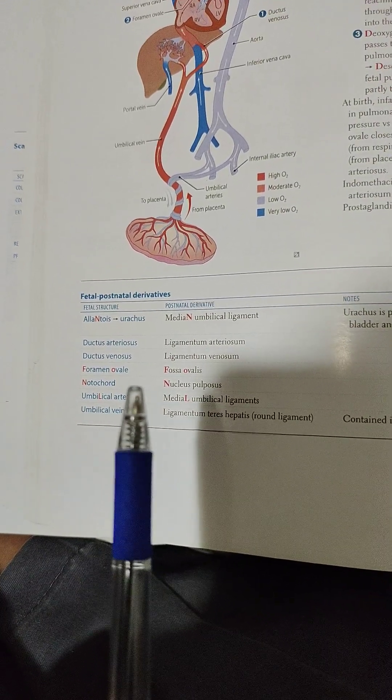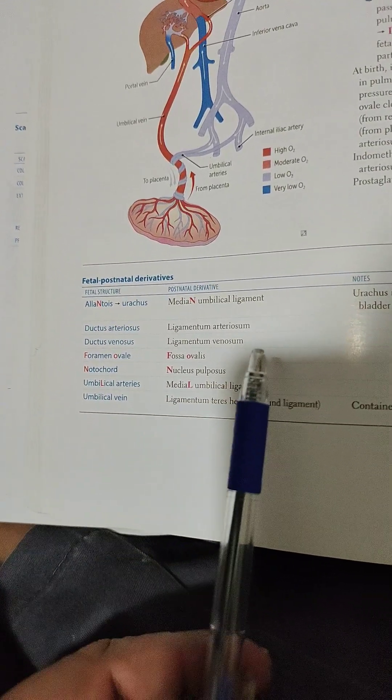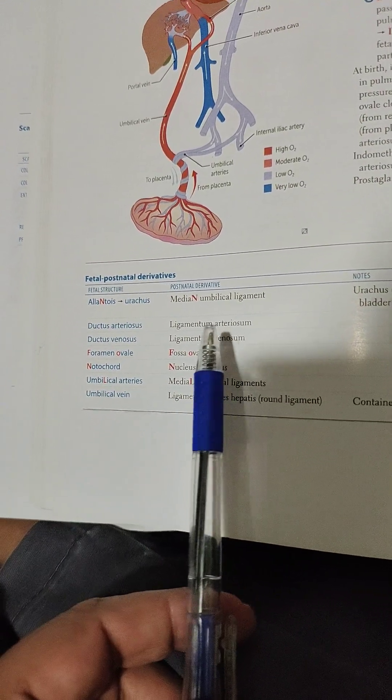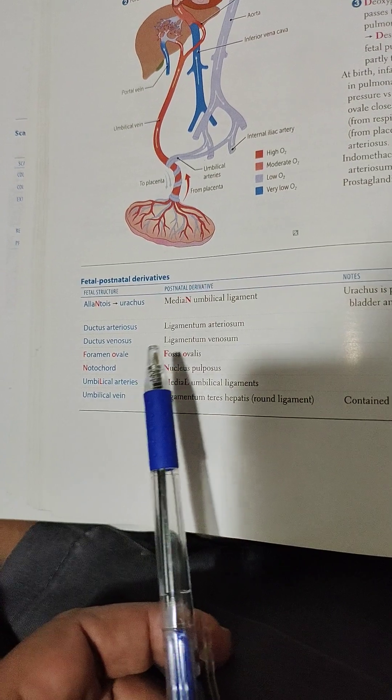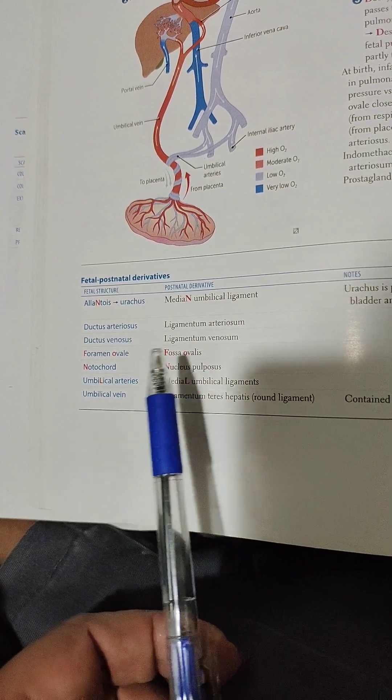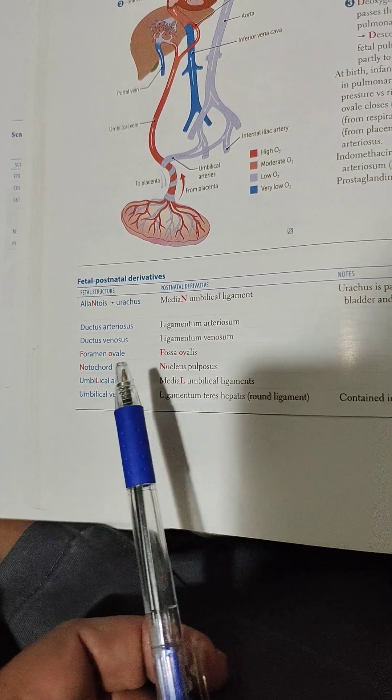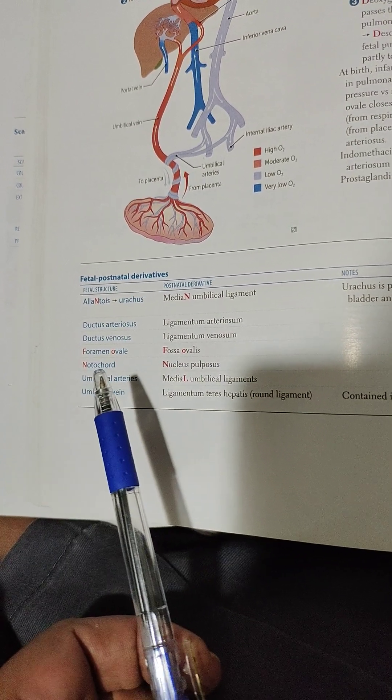To summarize postnatal changes: ductus arteriosus becomes ligamentum arteriosum, ductus venosus becomes ligamentum venosum, and foramen ovale becomes fossa ovalis.